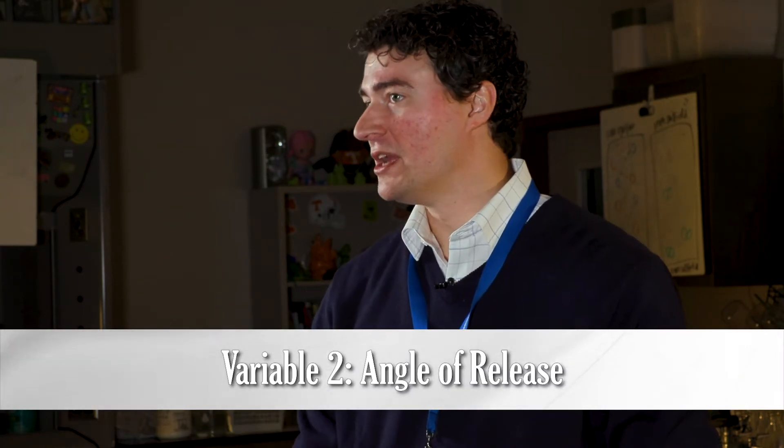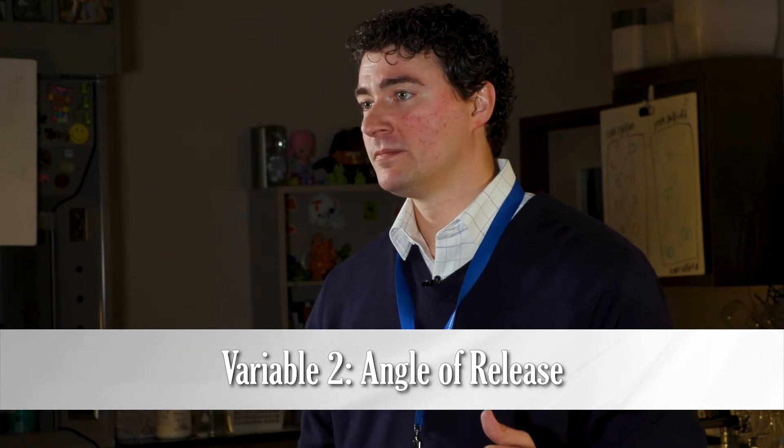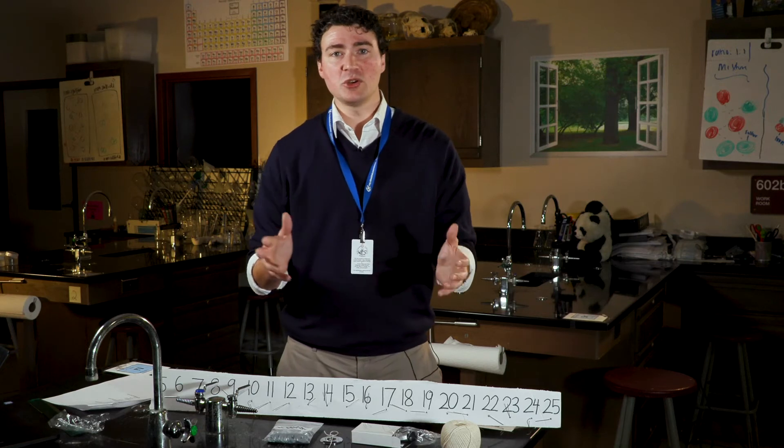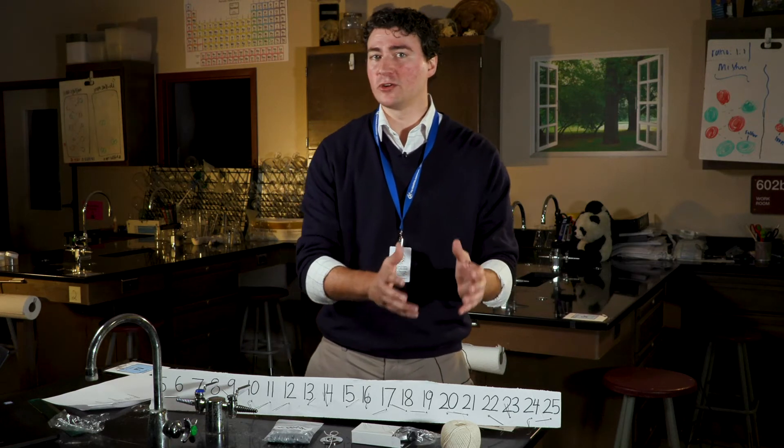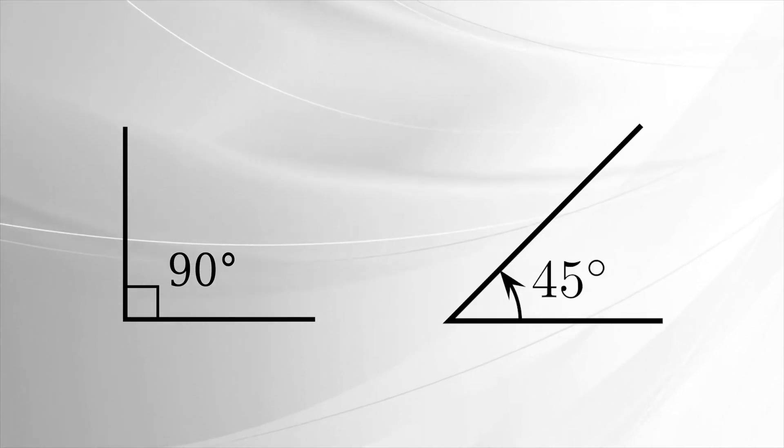Next, students predict and test what will happen when they release their pendulum from different angles of release. If protractors are available, then students could use those to obtain more precise angle measurements. Otherwise, students can use approximate angle release points: 90 degrees is straight out, about 45 degrees would be about halfway, etc.